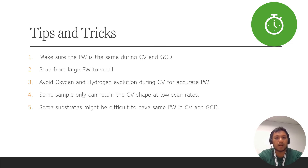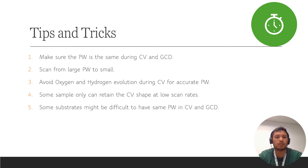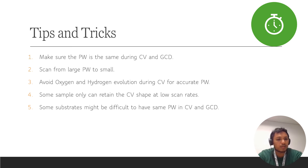Here are the tips and tricks for determining the potential window. Tip 1: Make sure the potential window is the same during cyclic voltammetry and galvanostatic charge-discharge. Tip 2: Scan from a large potential window to a small one — for example, when studying the positive electrode, scan from 0 to 1 volt or 0 to 2 volts, then minimize the window according to the oxygen and hydrogen evolution limits.